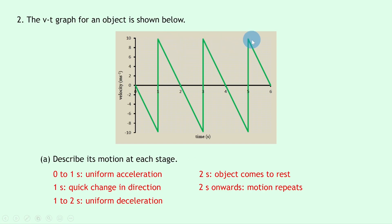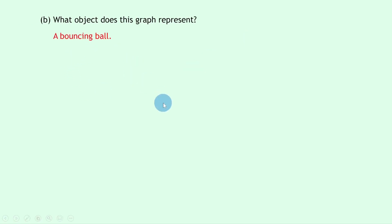And this specific example would be assuming no energy losses because you can see the velocity of the ball after each bounce is remaining the same. So that wouldn't be the case in real life where we do consider energy losses. So for part B we can say that it's a bouncing ball.